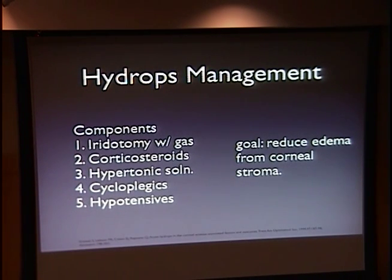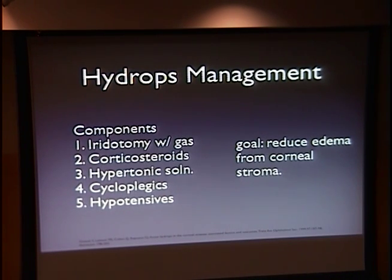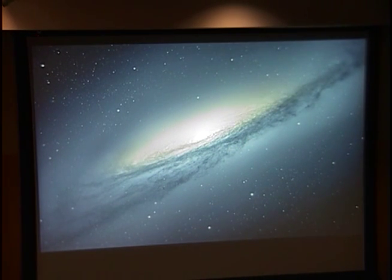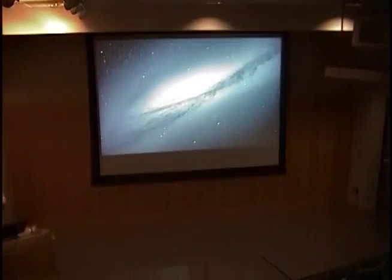For management, the main goal in hydrops is to reduce edema from the corneal stroma. We can go about that by putting a hole in the iris via LPI and placing Descemet's membrane to stop diffusion of fluid into the corneal stroma, using hypertonic solution to extract fluid from the edematous tissue, cycloplegics, and hypotensives to reduce the fluid burden inside of the anterior chamber. That is my presentation — I'd like to acknowledge Dr. Ambadi, Tom Oberg, and Steve Christensen who helped me with this presentation. Thank you for your attention, and I will take any questions.